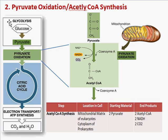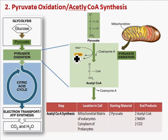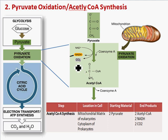The next step after glycolysis is pyruvate oxidation. The name tells you what's going to happen — pyruvate is going to be oxidized, so it loses electrons. Those electrons go to NADH: NAD+ grabs the electrons, it's reduced, and becomes NADH. Pyruvate has three carbons and the end product is acetyl-CoA, which has two carbons — we lost one as CO2. So we literally exhale carbon dioxide from the sugar we're eating.